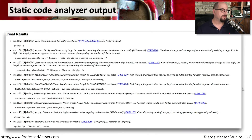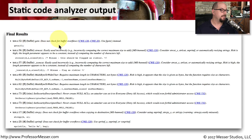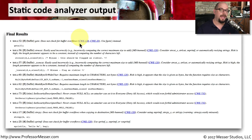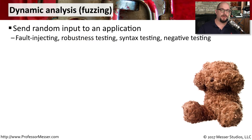Here's an example from some static code analyzer output. You can see the name of the file that was tested, and the objection is listed. For instance, this particular line does not check for a buffer overflow. It gives you some examples of what that means, and then some options of what you could use instead of the code that you're currently using. Once you've written your application, the source code doesn't change — that's why we use static code analyzers for your source code.